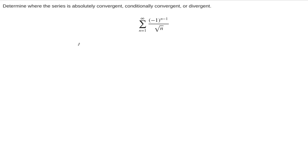In this example, we are asked to determine whether or not this series is absolutely convergent, conditionally convergent, or divergent. The key words here are absolutely or conditionally, as far as the convergence goes. So the first thing to do is determine whether or not this series converges at all. And once we have an answer to that question, then we can ask whether it's conditional or absolute.